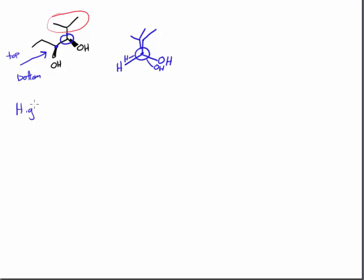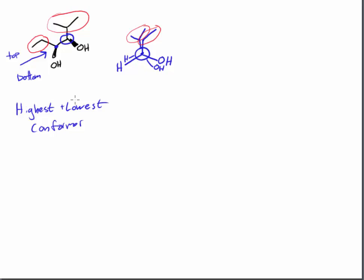Even if you're not asked for the highest and lowest energy conformer, it's still a good idea to get in the habit of understanding which is which. Just like the previous example, the largest groups need to be either furthest apart or closest together to determine the highest and lowest conformer. The large groups here are the isopropyl on the back carbon and the ethyl on the front carbon. You can already see that we have the highest energy conformer here, because the two large groups are eclipsing.